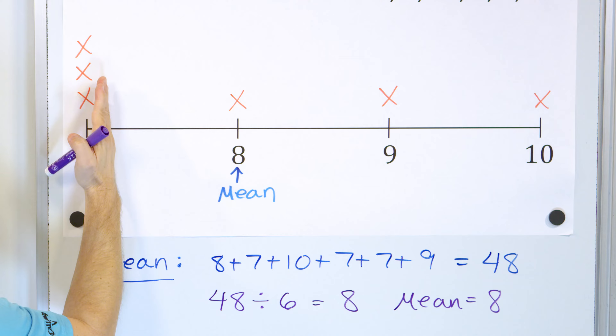For the mean, we add up the numbers: 22 plus 22 plus 22 plus 23 plus 29 plus 32. We get 150. We have 6 data points, so 150 divided by 6 gives us 25. The mean is 25. So we can put that on the chart right here — the mean is exactly equal to 25.